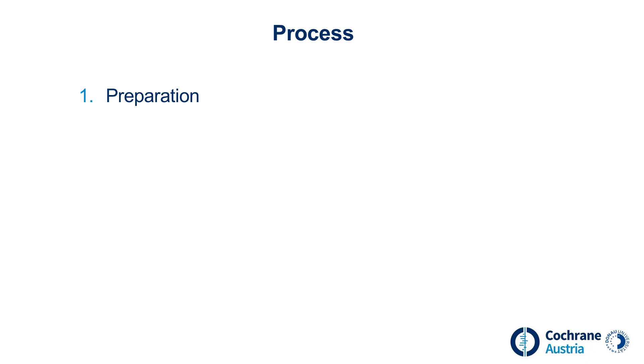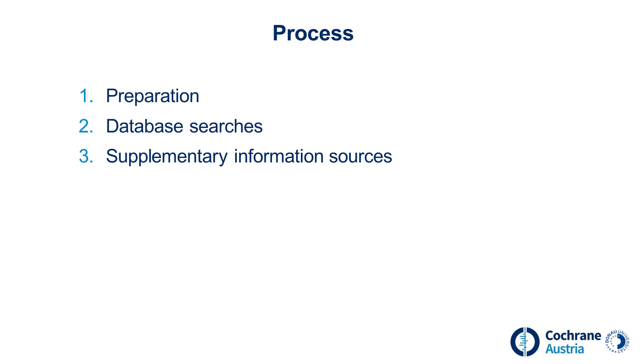The process of systematic literature searches consists of four steps. They are intended to ensure that the search process is transparent and that all relevant studies are found when searching. These steps are: the preparation, the database searches, the use of supplementary information sources, and the documentation of the search process.